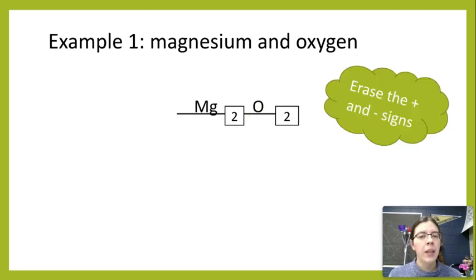Once we have this done, we want to erase those positive and negative signs because we no longer need them. The positive and negative are talking about charges. When we have the boxes filled in, those subscripts are talking about how many atoms we have, and we can't have negative oxygen. It doesn't make sense.